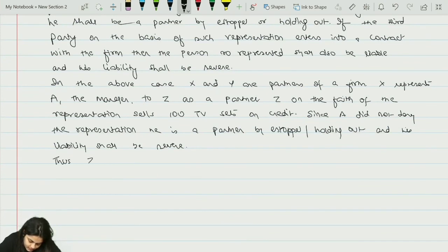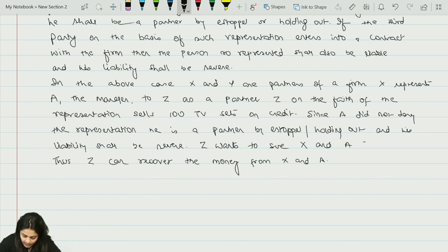Thus, Z can recover the money from X and A. This is the conclusion. You can also add here, Z wants to sue X and A for the money. So this sentence you can add here. And then conclude, since A has been represented and he did not deny it, he is a partner by estoppel. So he will have liability. Thus, Z can recover the money from X and A.